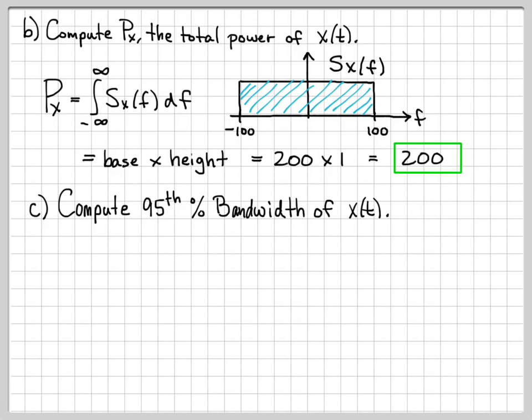Normally when we talk about percent bandwidth, we're dealing with signals whose frequency content actually goes over the entire frequency axis — there's no spot where it actually goes to zero and stays zero. That's usually the purpose of having a quantity like the 90% or 95% bandwidth. In this problem, we do have a signal whose frequency content goes to zero and stays zero above a certain frequency. Our signal has no frequency content above 100 Hz, so computing the 95th percent bandwidth doesn't make a lot of sense since it has a very well-defined bandwidth of just 100. But just to get practice, we're going to go ahead and do it.